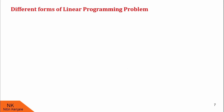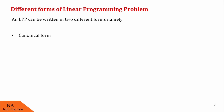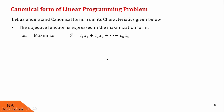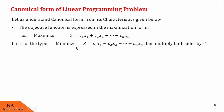Now, let us see the different forms of linear programming problem. An LPP can be written in two different forms: namely canonical form and standard form. We will see them one by one. First, canonical form. The first characteristic is that the objective function is expressed in the maximization form, that is, maximize z equal to c1x1 plus c2x2 up to cnxn. But if it is of the type minimize z, then we multiply both sides by minus sign to convert it into maximization type.